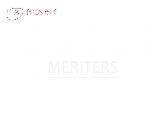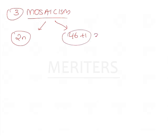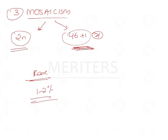The last type is mosaicism. This is a very peculiar type because here, half the cells of the body show normal diploid, whereas the others show an extra pair of chromosome number 21. So not all cells have 46 plus 1 chromosomes — some are normal diploid cells and some show the additional 46 plus 1 chromosome. This is a very rare type, accounting for only 1–2% of all Down syndrome cases.